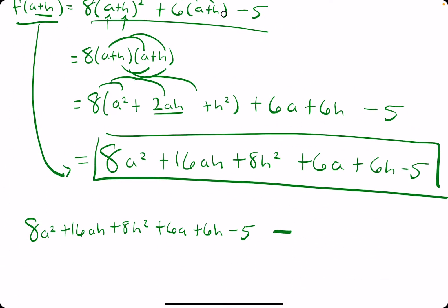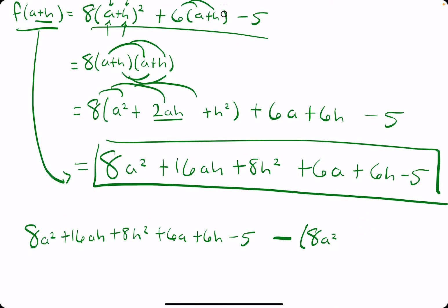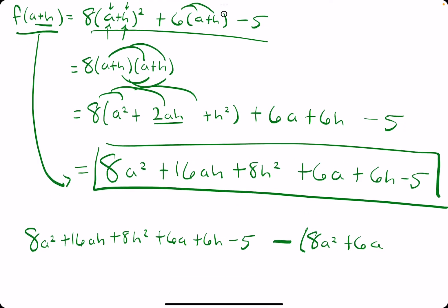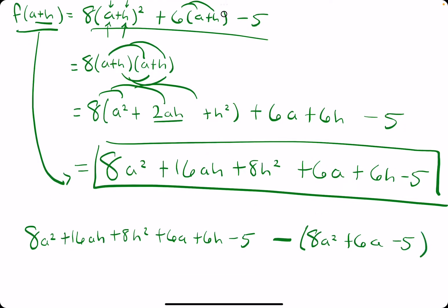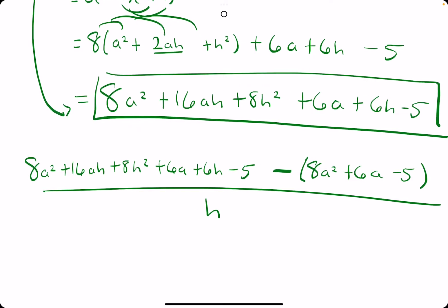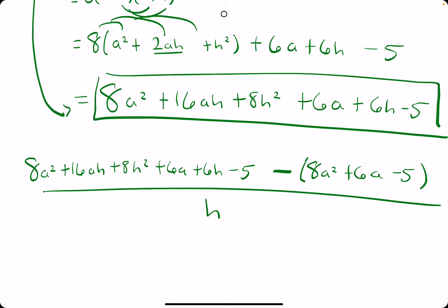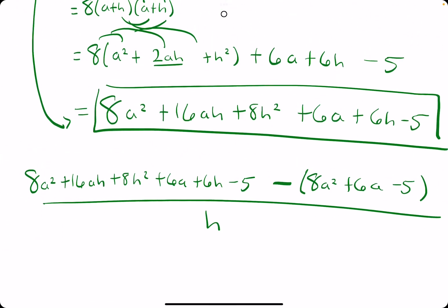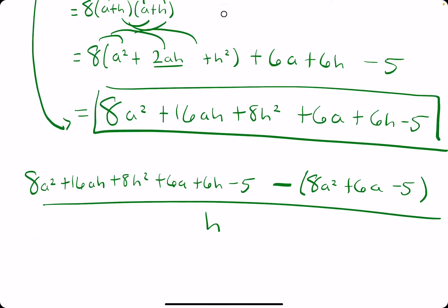And then we'll subtract f of a, which is this. So, make sure to keep f of a in parentheses when you subtract it. And then we're dividing this all by h. So, it looks crazy right now. But the super nice thing that will always happen is all these terms from f of a should cancel. So, because we're subtracting or negating all these terms, we basically have minus 8a², which cancels with this 8a².